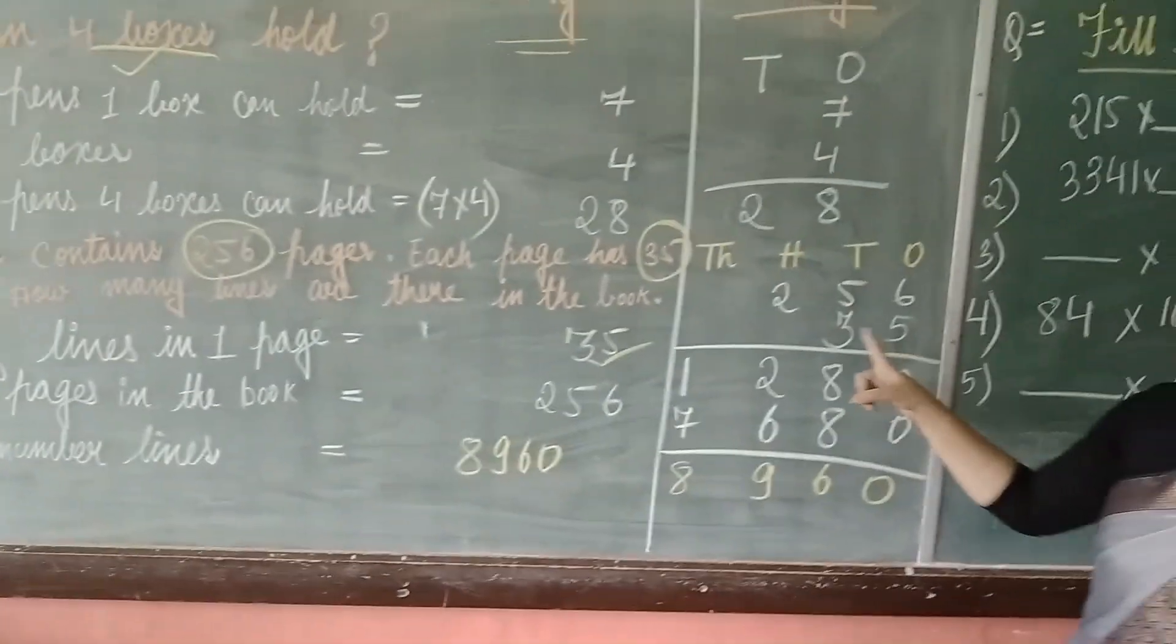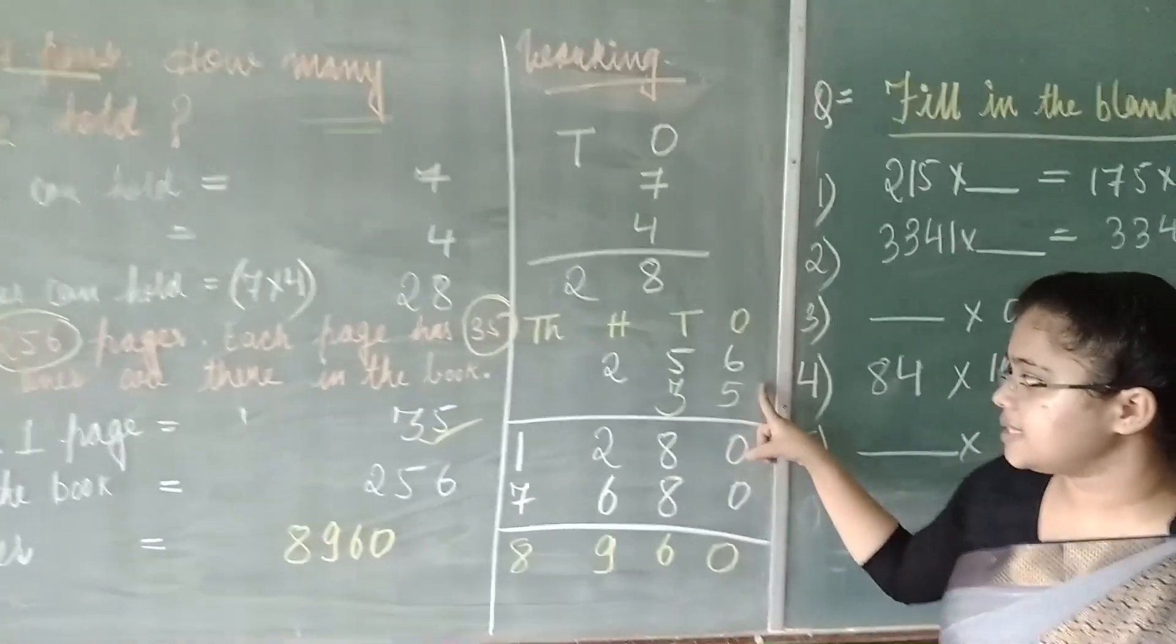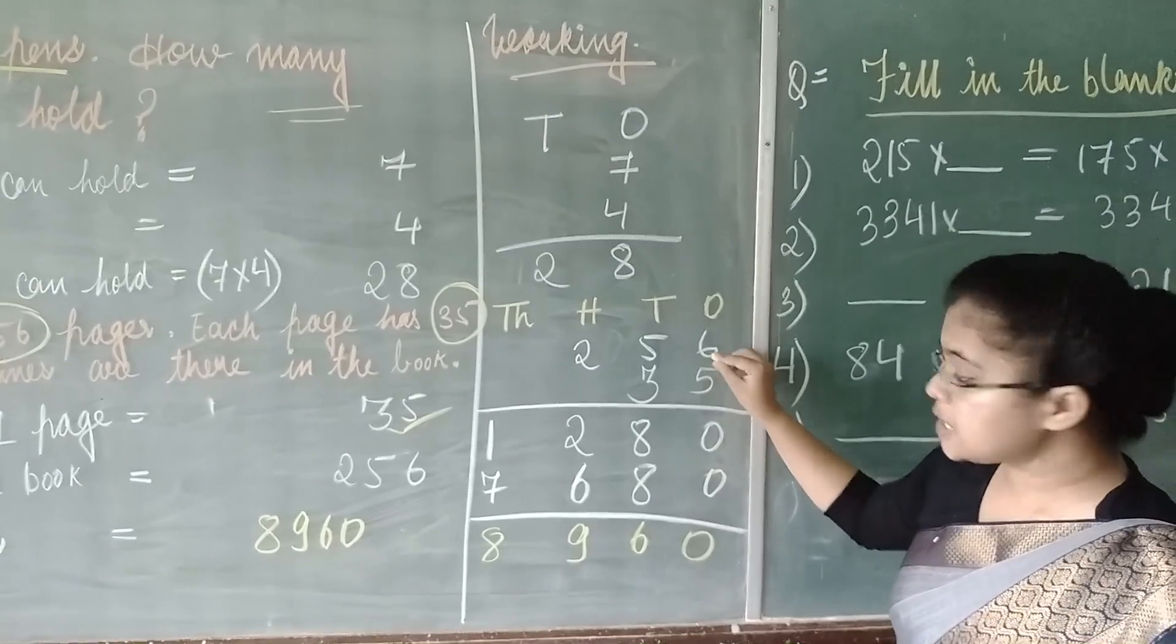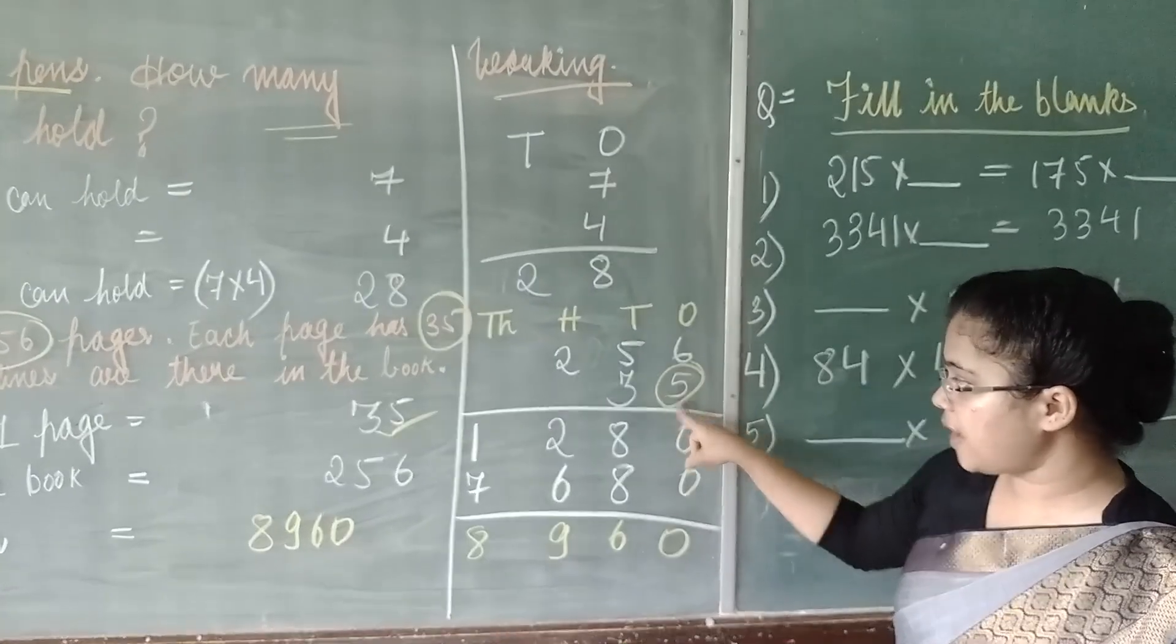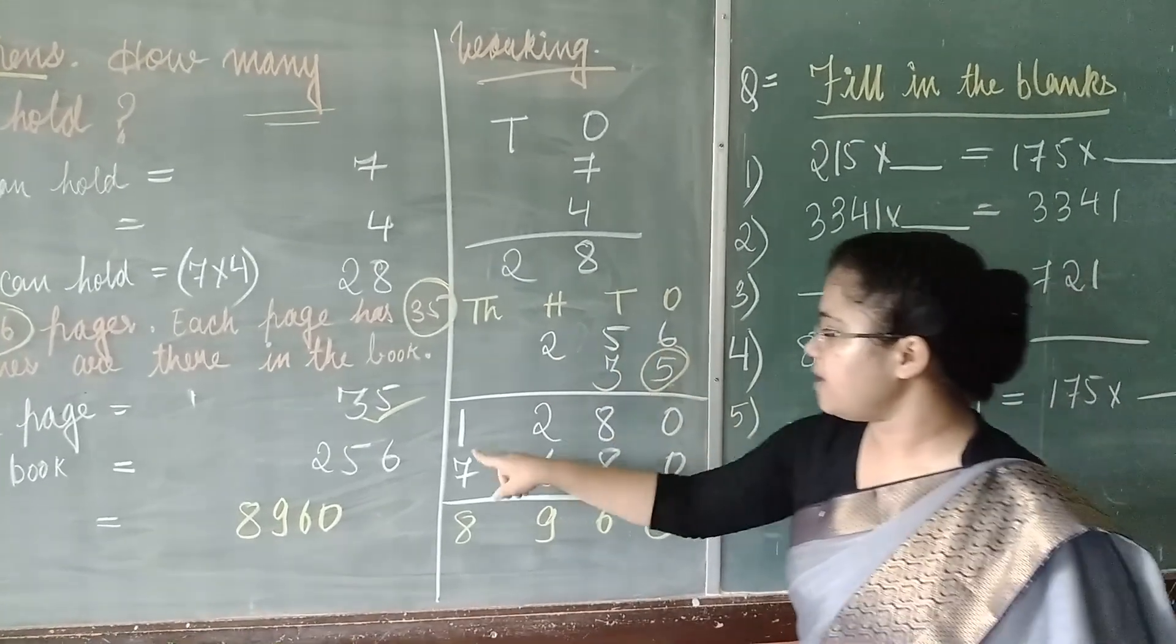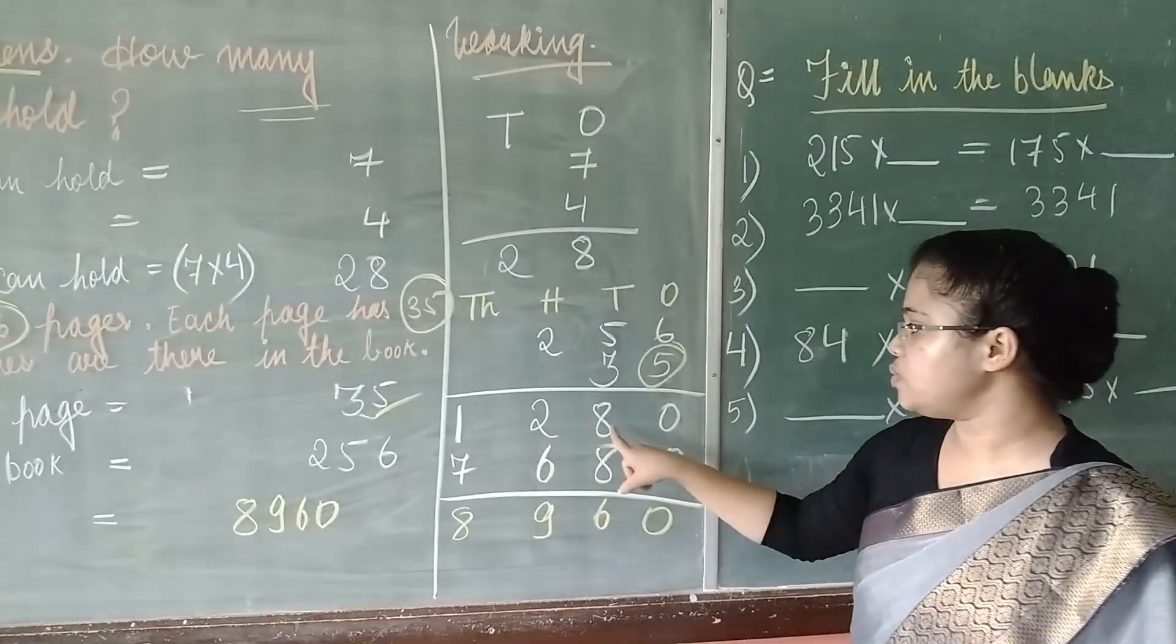Then we come to the working side, 256 multiplied by 35. I have already explained. First of all, you will multiply by 5. When you multiply 256 by 5, you will get 1280.